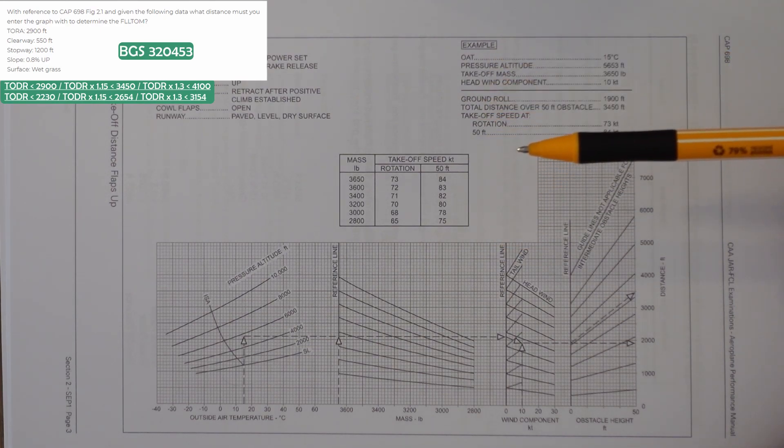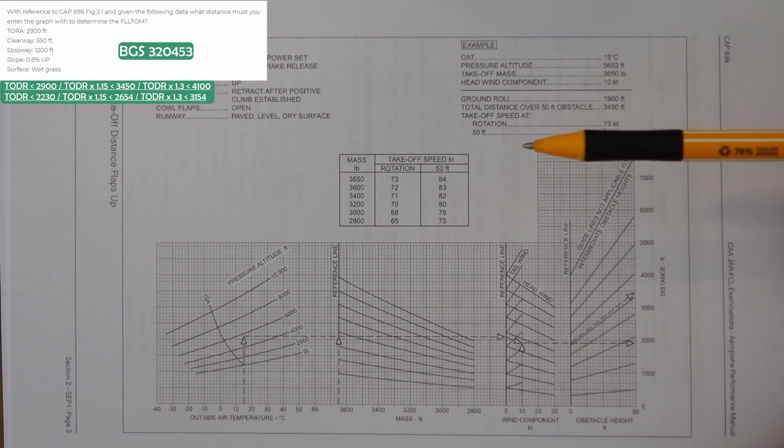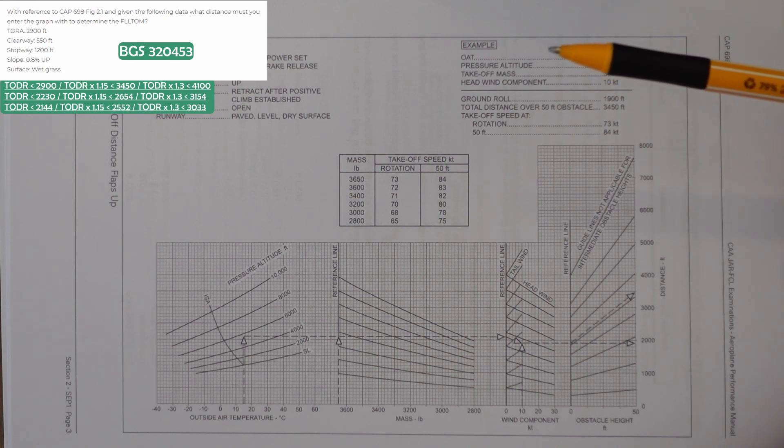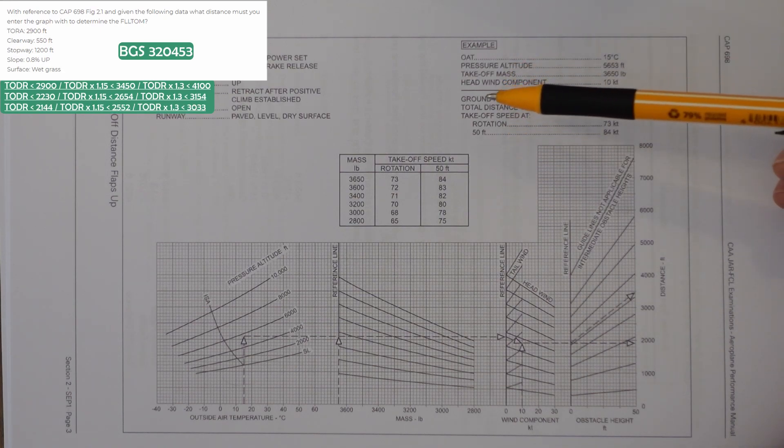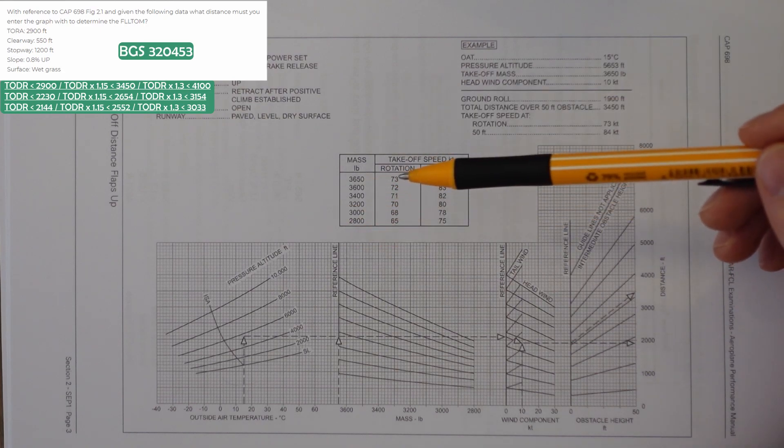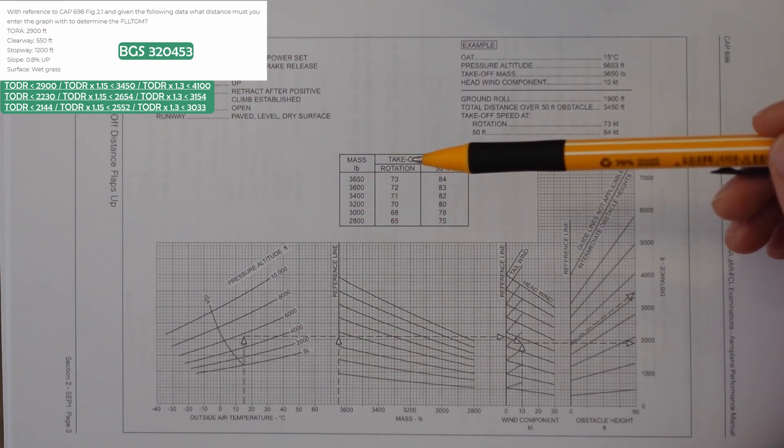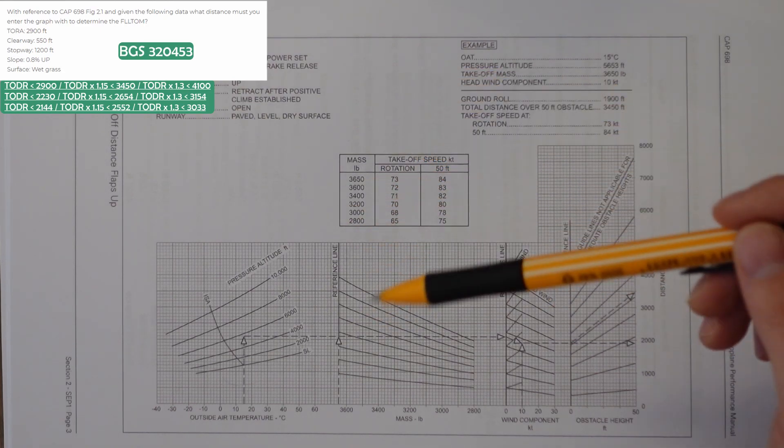For every 1% of upslope, we increase the distance by 5%. So with our 0.8% upslope, we apply a 4% correction. And then we need to remove the regulation factors. So with the slope, we get these factors, and then for the regulation factors, we get this.